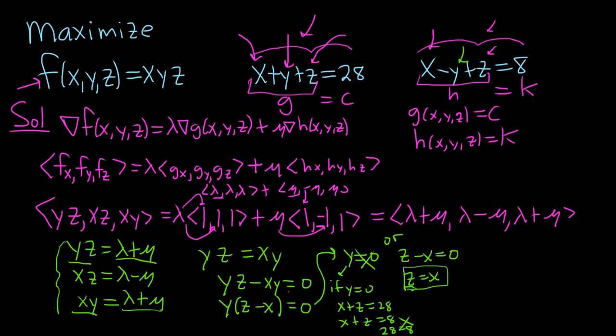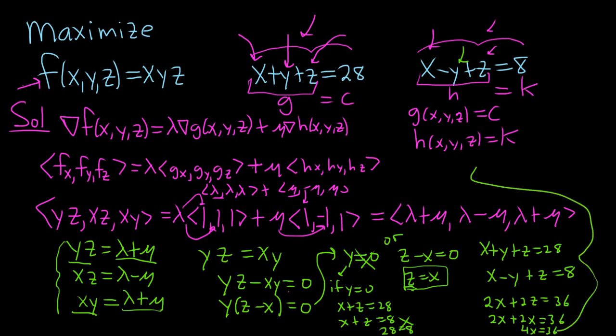Now perhaps we should go to our constraints. Let's rewrite our constraints here. We have x plus y plus z equals 28, and then we have x minus y plus z equals 8. If we add these equations, we end up with 2x plus 2z equals 36. And I suppose that x is equal to z. So we can write this as 2x plus 2x equals 36. So 4x equals 36. That means that x is equal to 9.